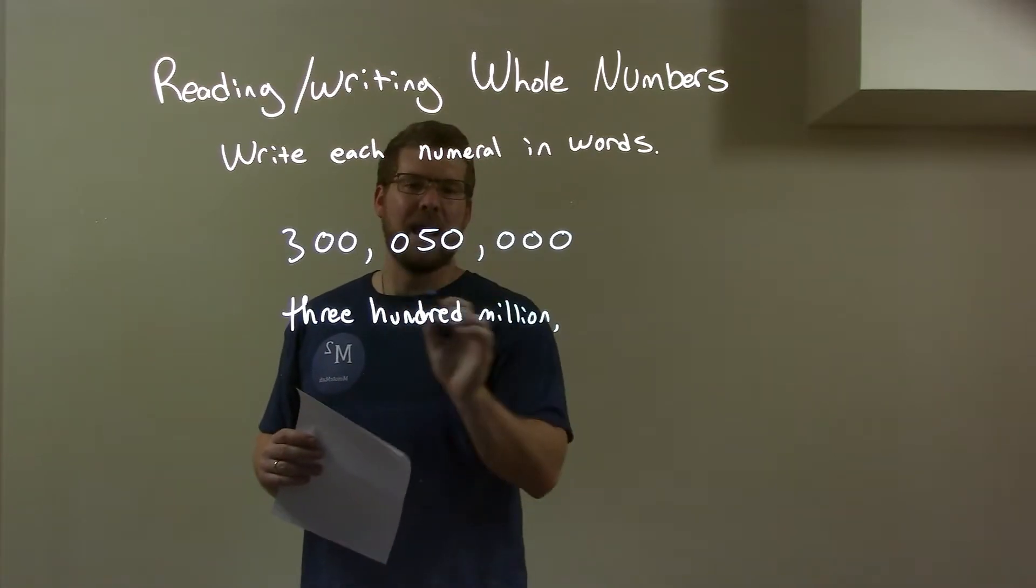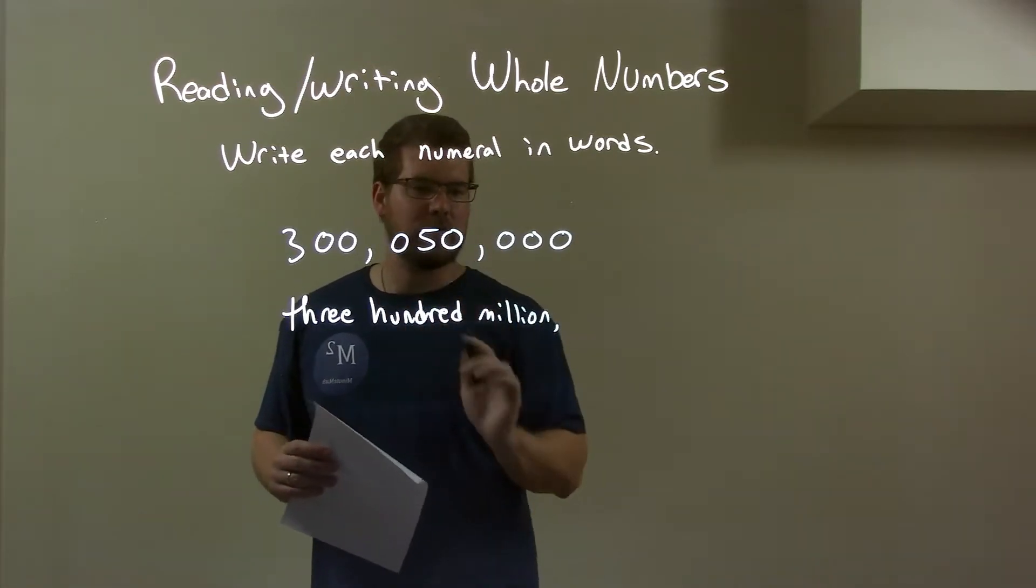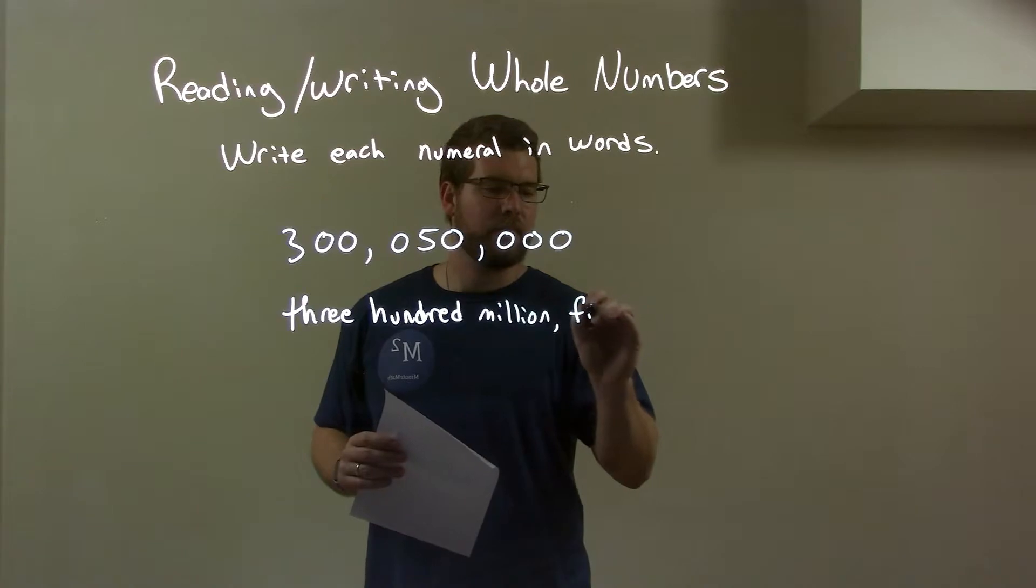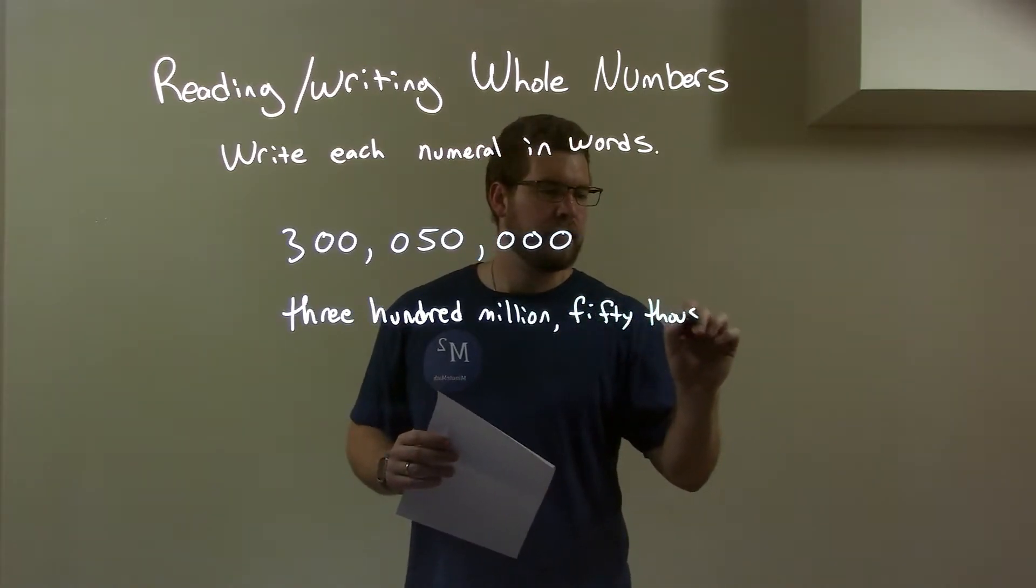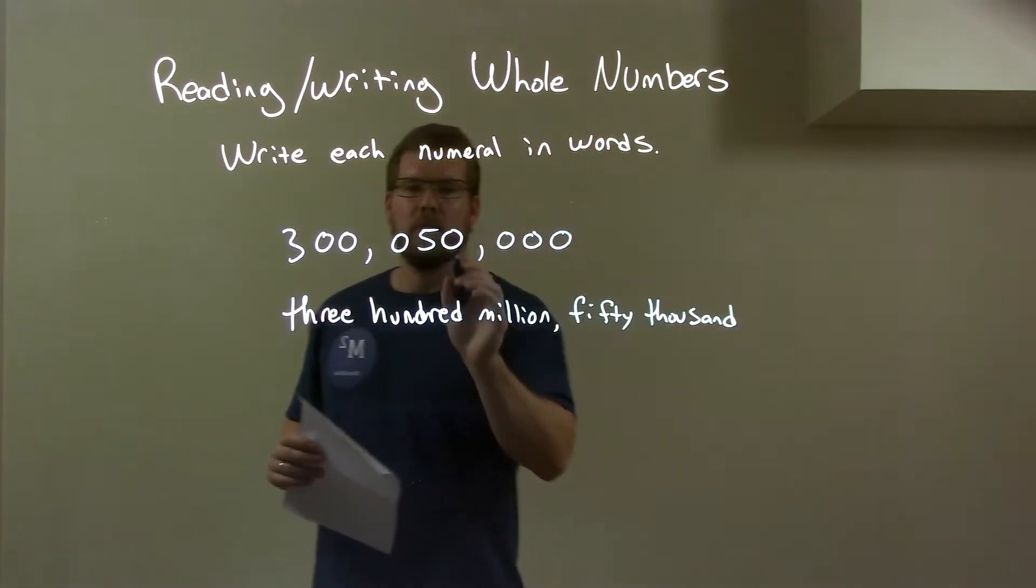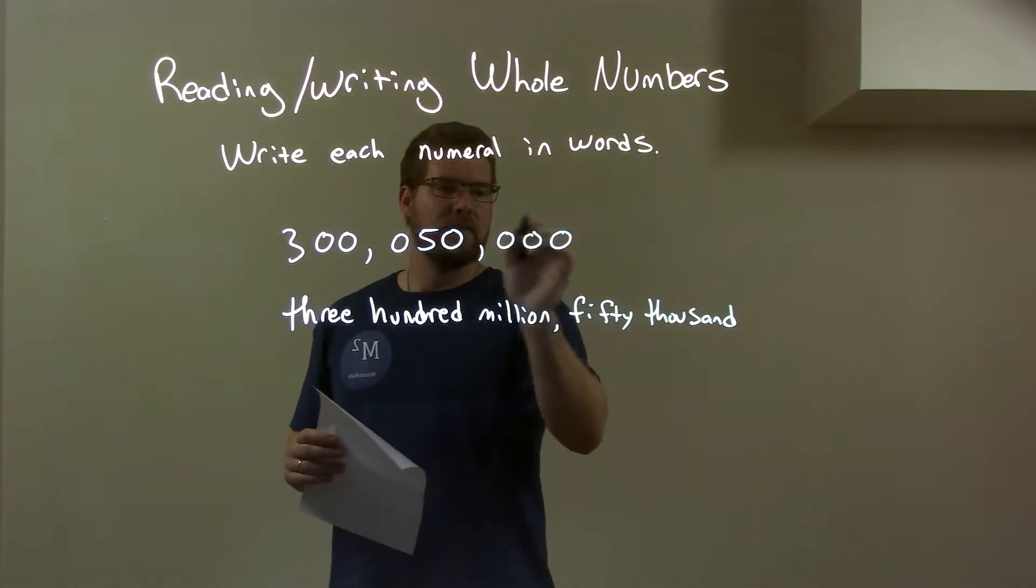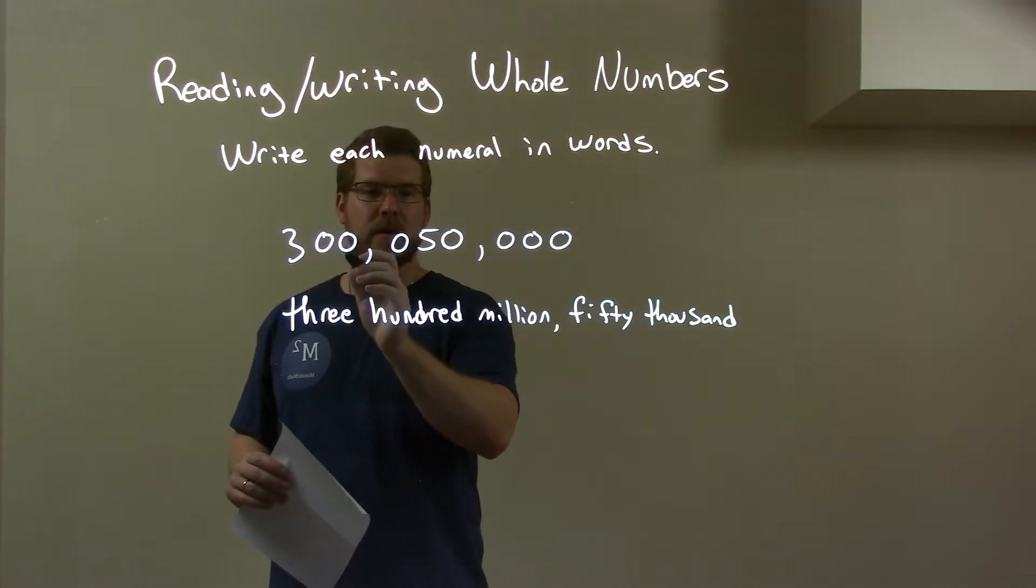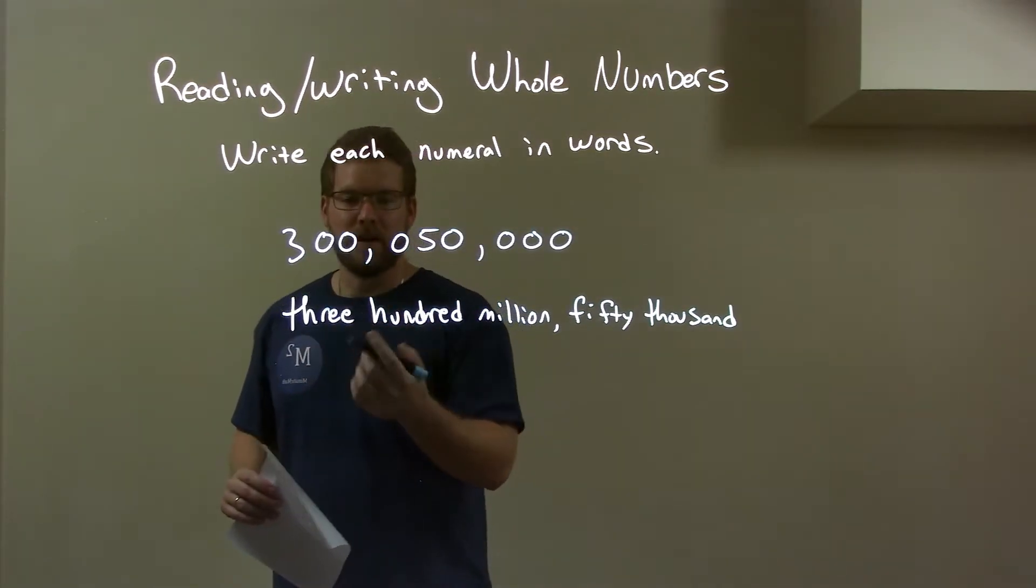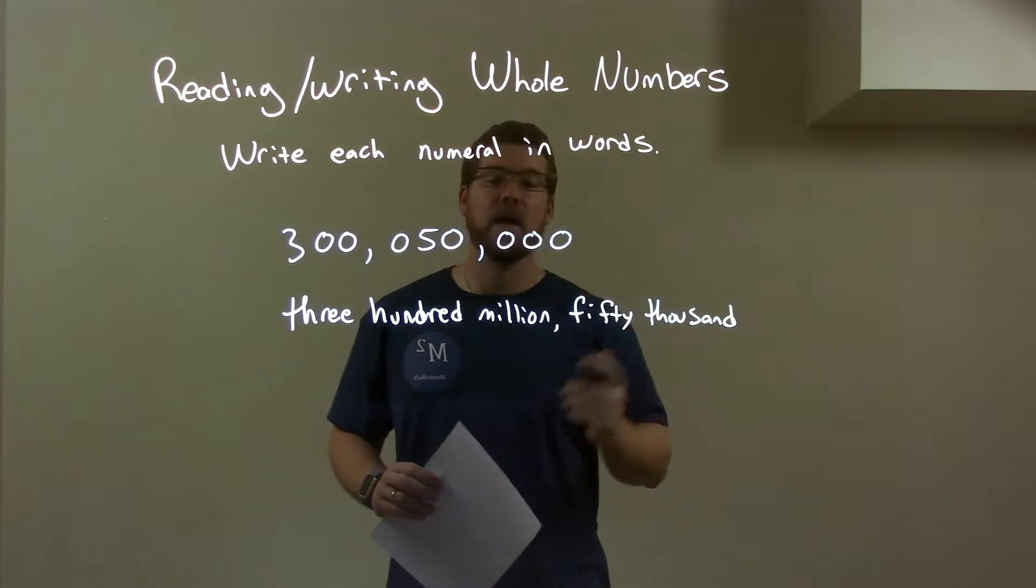Then, in this middle section, in the thousands section, we see 50. So it's 50,000. So we have 300 million and 50,000. There's nothing left, so we're done. So our final answer: 300 million, 50,000.